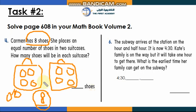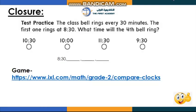The subway arrives at the station on the hour and half hour. It's now 4:30 and Kate's family is on the way, but it will take one hour to get there. What is the earliest time her family can get on the subway? Also: the class bell rings every 30 minutes and the first one rings at 8:30. What time will the fourth bell ring? Think about it. There's also a fun game — don't miss it, it gives you more practice reading and telling time.